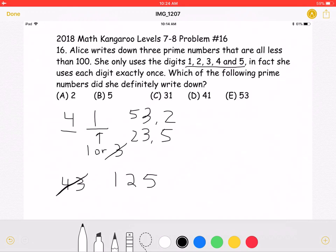However, the question asks for which of the following numbers she definitely wrote down. And as you can see, she definitely wrote down 41, which is answer choice D.